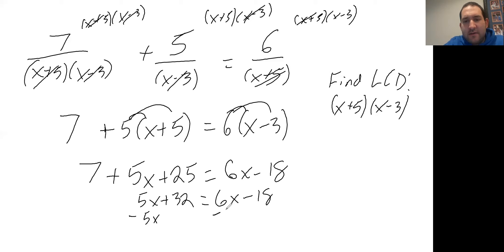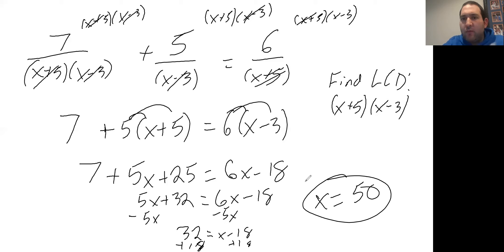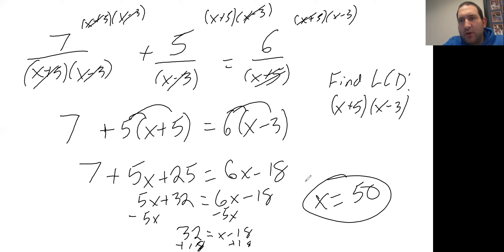Now we move the variables to one side and numbers to the other. Subtract five X from each side: thirty-two equals X minus eighteen. Then add eighteen to each side: X equals fifty. So the answer is X = 50. To summarize: find the LCD, factor if necessary, multiply each fraction by the LCD, cancel to eliminate all denominators, then solve the resulting equation.